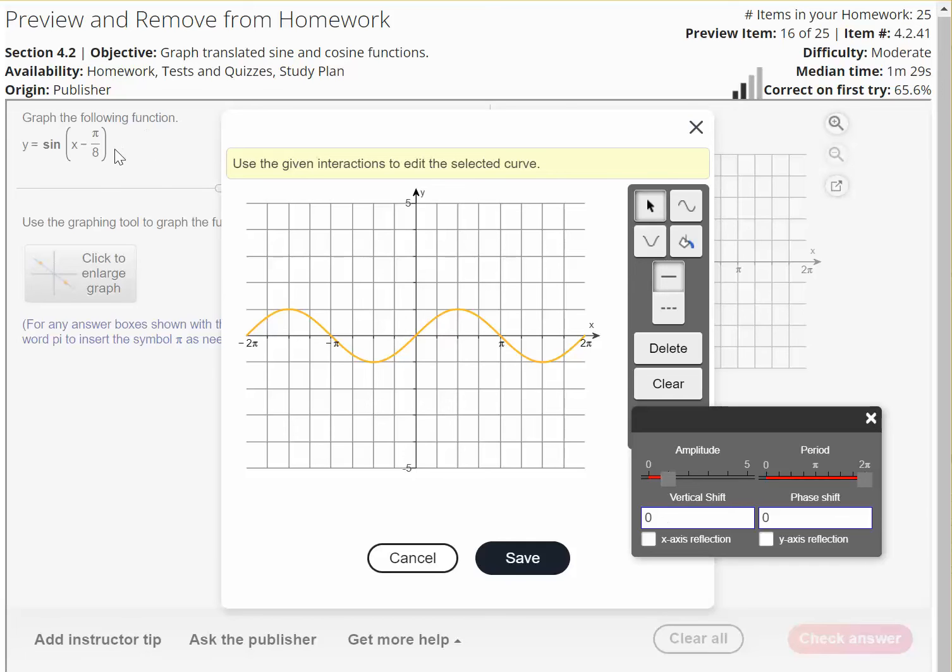There's no vertical shift. If we had like a plus 4 outside the sine here, then we would have a vertical shift, but we don't. We don't have any reflections. And so the only thing we need to do, this is going to be a phase shift of pi over 8.